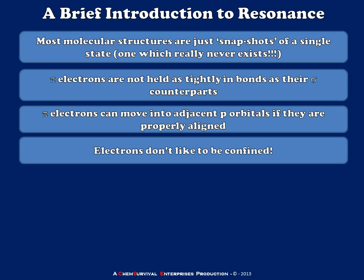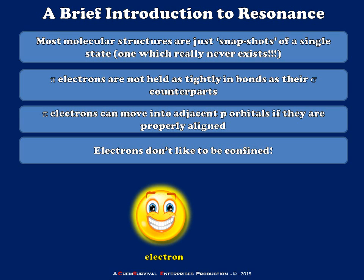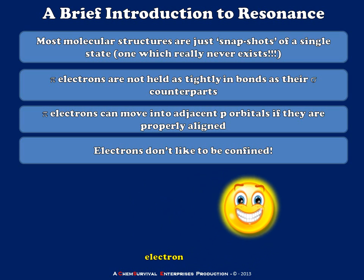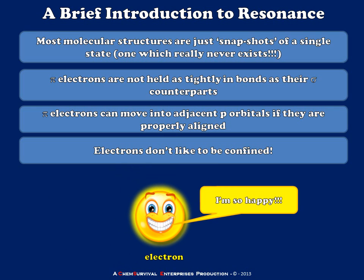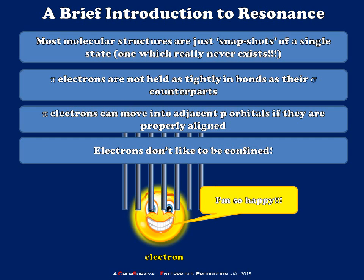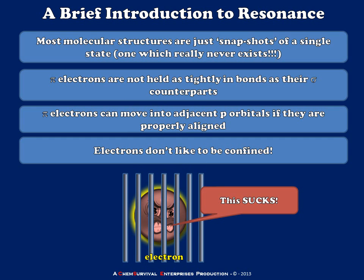The real driving force behind resonance is that electrons don't like to be confined. An electron will be very happy to have lots of space to move and be free — a large volume of space makes a happy electron. Given a chance, electrons will assume a larger volume of space in which they're moving, and this is what resonance really provides.